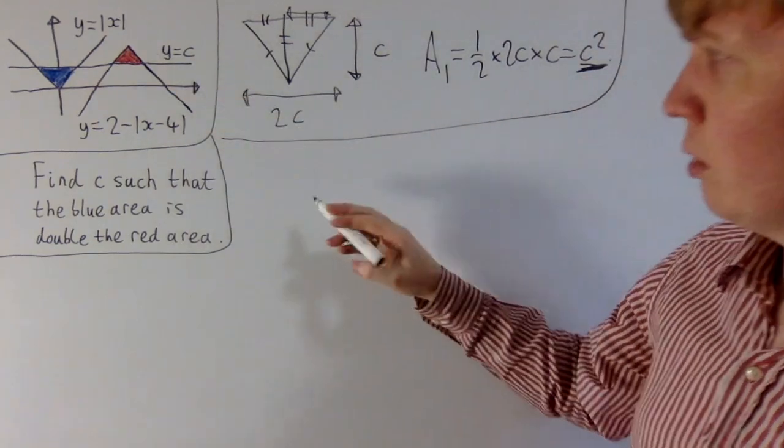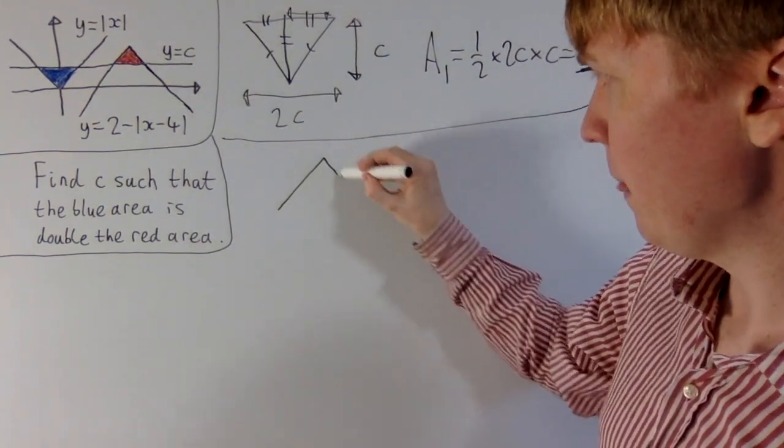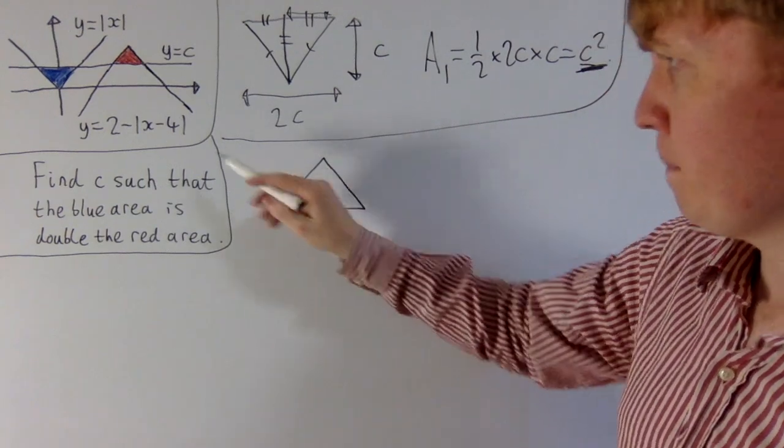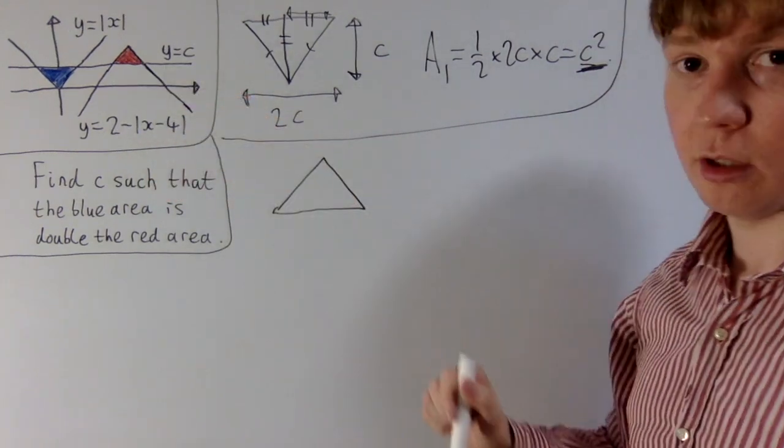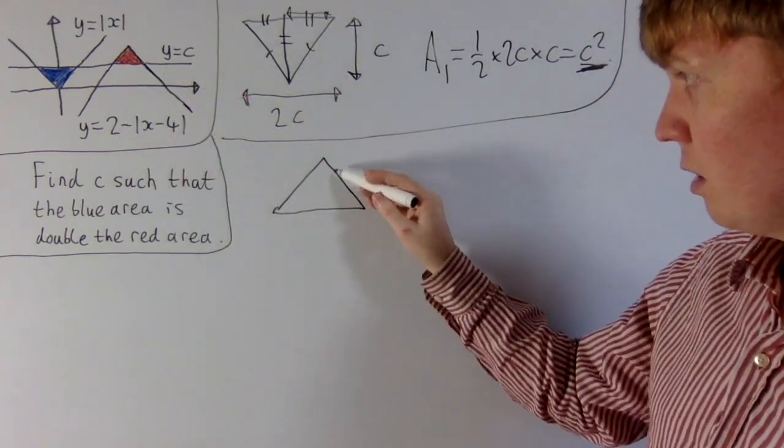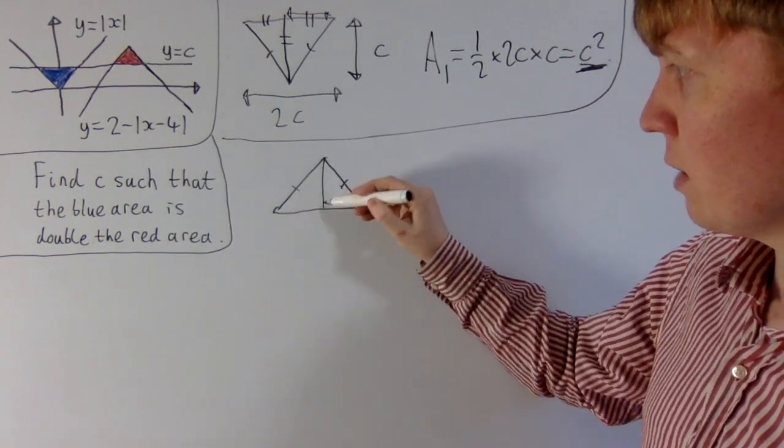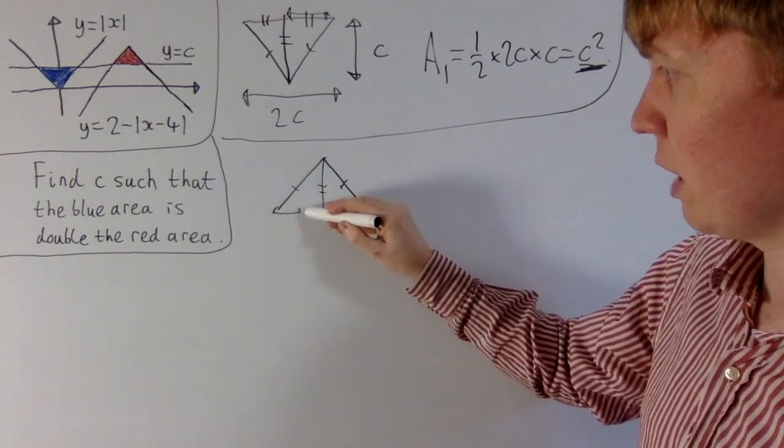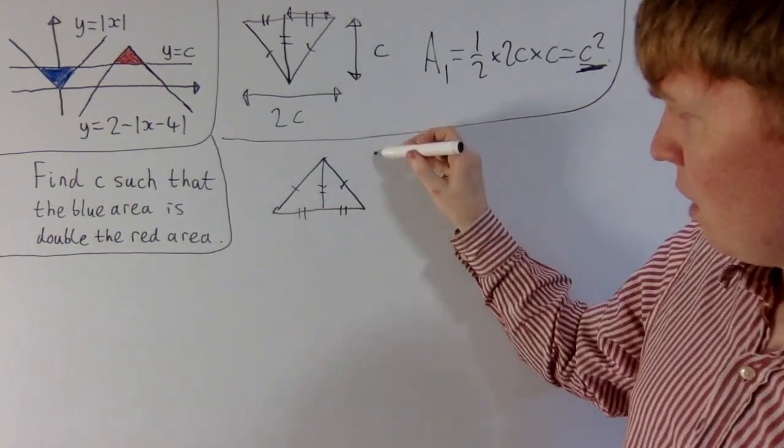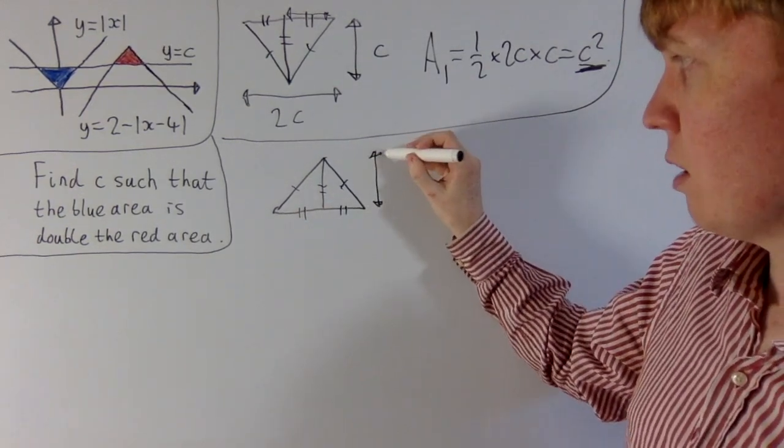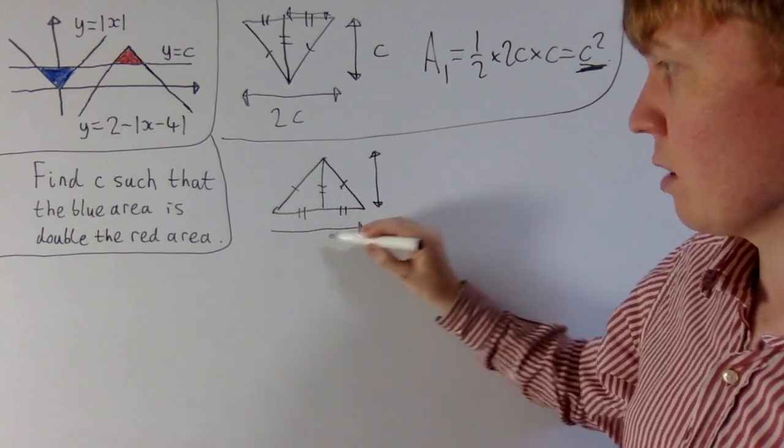So now what about the red area? Well let's draw the triangle again, and you can see it's still basically an inverted modulus function. So we still get the nice 90 degree angle here, it's still an isosceles triangle, which can be split into two smaller isosceles triangles. And let's think about what the height of the triangle is, and then we'll work out what the width is at the bottom.